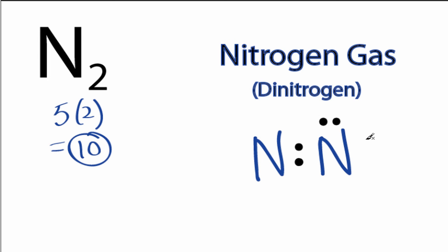Go around the outside. 4, 6, 8, and 10. We can see the nitrogen on the right has an octet, but the nitrogen on the left only has 4 valence electrons.